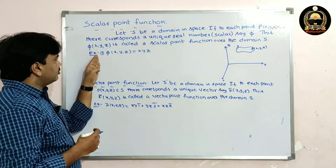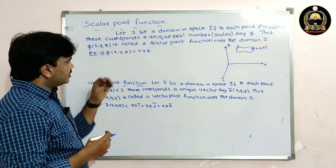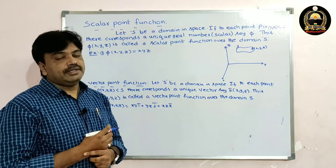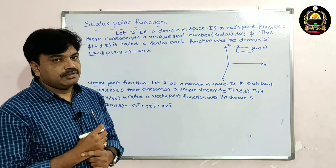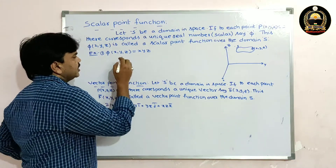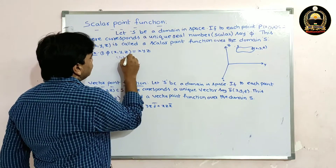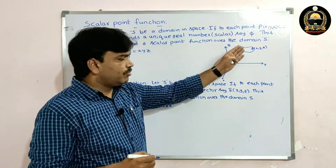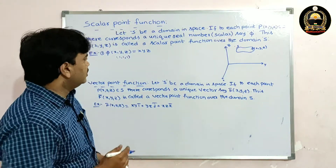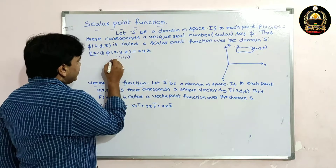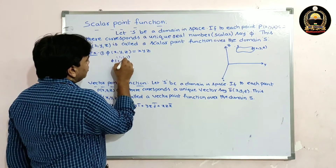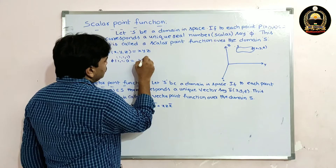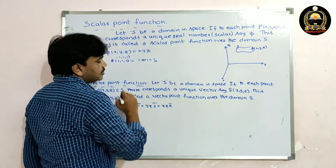For example, if φ(x, y, z) = xyz, and we take any point in space, say (1, 1, 1), then φ(1, 1, 1) = 1 × 1 × 1, which gives us the value one.